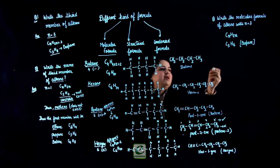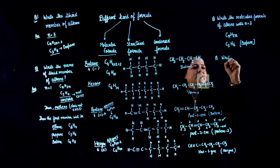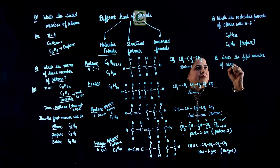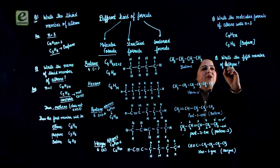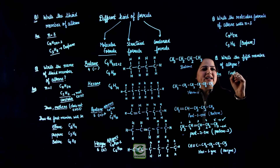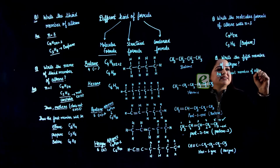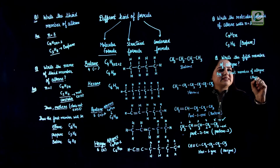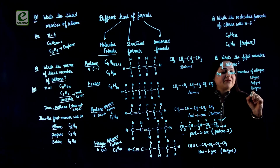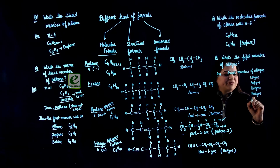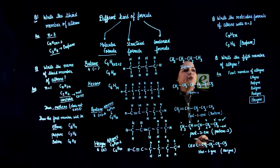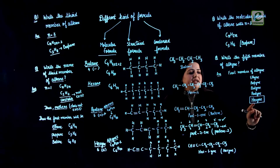Another question: write the 5th member of alkyne. The first member of alkyne is ethyne. Since the series starts at ethyne (2 carbons), it will always be 1 carbon more than the member number. So the 5th member will be hexyne.